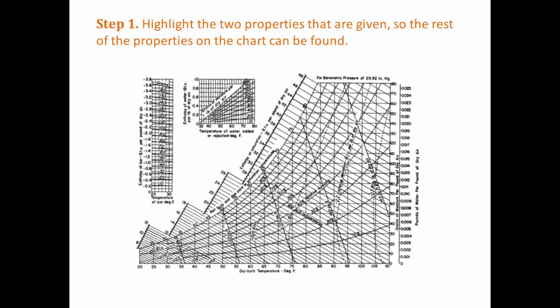Let's begin solving the question. We can start off by highlighting the properties that we've been given. We're told that the dry bulb temperature is 80 degrees Fahrenheit. We can find the axis that's labeled dry bulb temperature, find 80 and follow that line. Do the same for wet bulb temperature. Find the axis that says wet bulb temperature, find where 67 is and highlight that line. We're mainly interested in the point where those two lines meet, which is going to be shown by an orange dot.